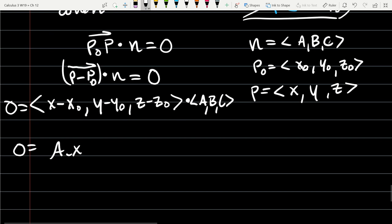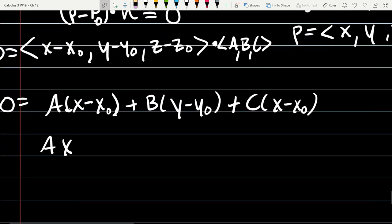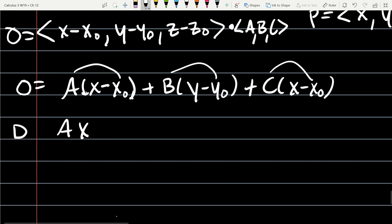So A times X minus X0. Comma. B times Y minus Y0. Not comma. You're adding this together. Plus C times Z minus Z0. Distribute A, B, and C. A, X. Now all we're going to get is another X value here. So we'll get a constant when we do these products right here. So I'm just going to collect all my constants to the left side. We'll call that letter D. A, X plus B, Y plus C, Z equals D.